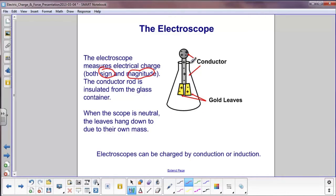We'll start with when there's no charges nearby and you basically have a neutral system. The gold leaves will hang straight down like this due to their own mass. We will be showing here how electroscopes can be charged by both conduction and induction.